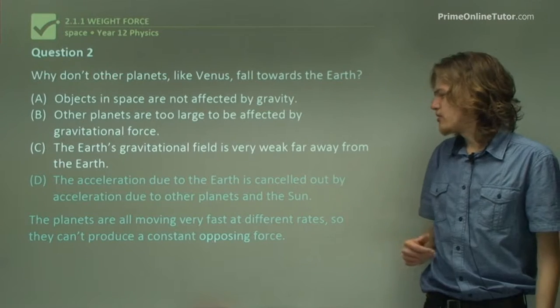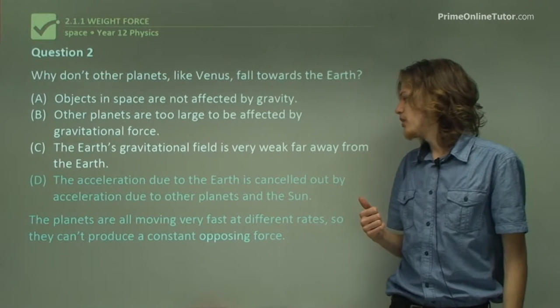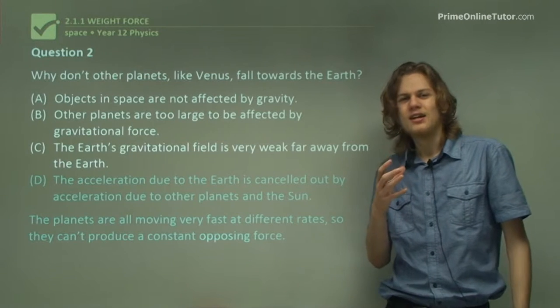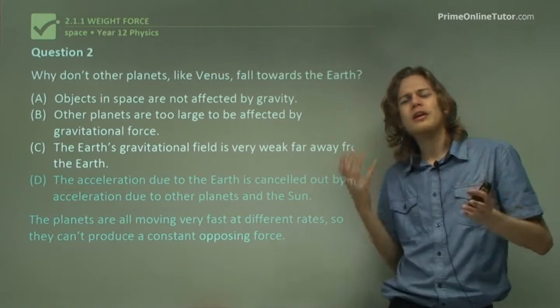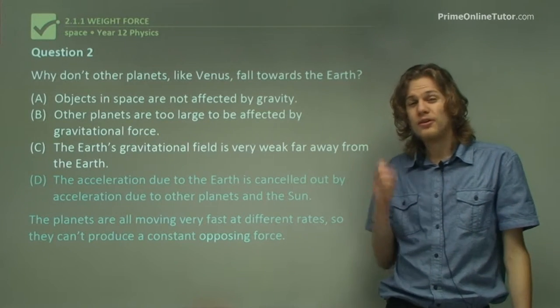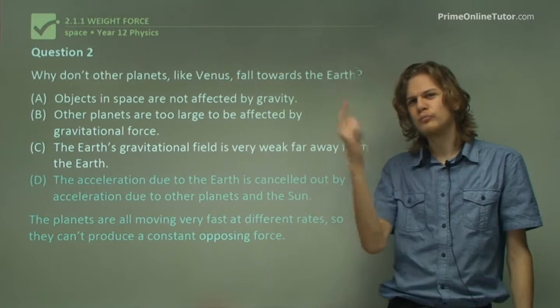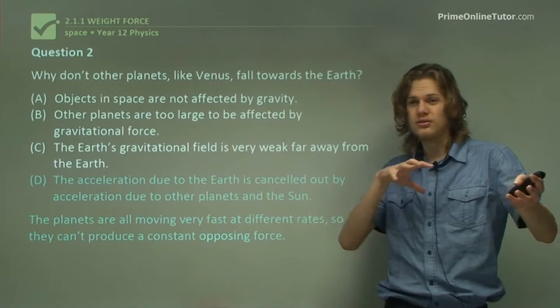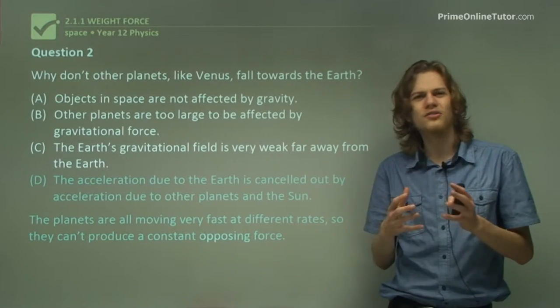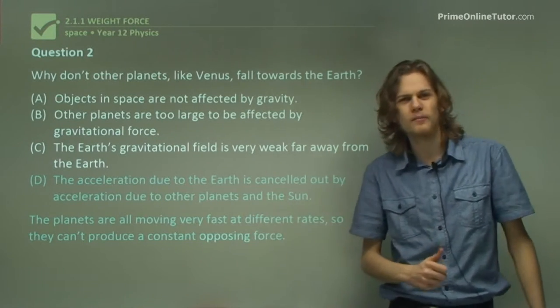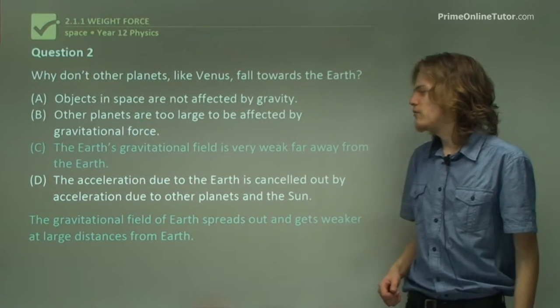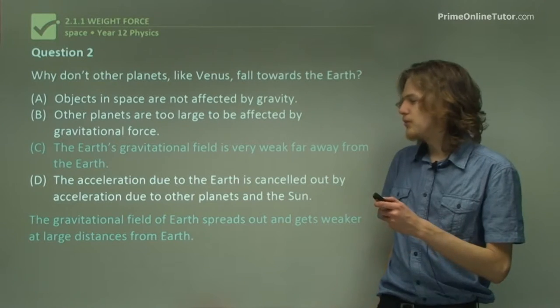D says that the acceleration due to the Earth is cancelled out by acceleration due to other planets. Now, technically, you could use this as an answer and say that it's all in some very delicate balancing act. But if you look at the actual motion of the planets, this isn't the case. They just sort of go around the sun very smoothly and uniformly. They don't have to pull out this complicated, delicate balancing act to make things not attract each other. So our last option is C. The Earth's gravitational field is very weak, far away from the Earth. And this is, in fact, the correct answer.